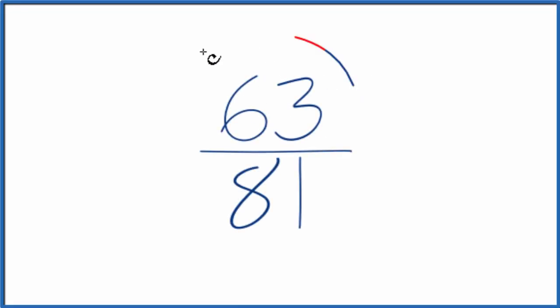Let's simplify the fraction 63 over 81. What we want to do is find another fraction that's equivalent. It's equal to 63 divided by 81. You get the same decimal answer, just that we've reduced the fraction to lowest terms.